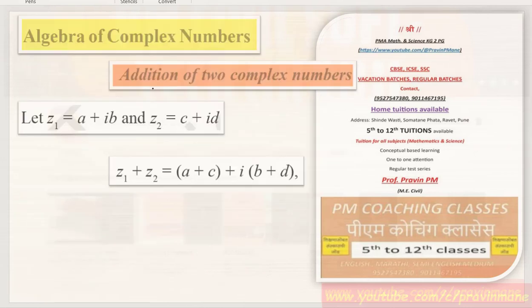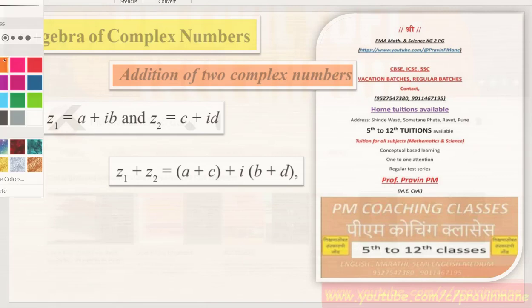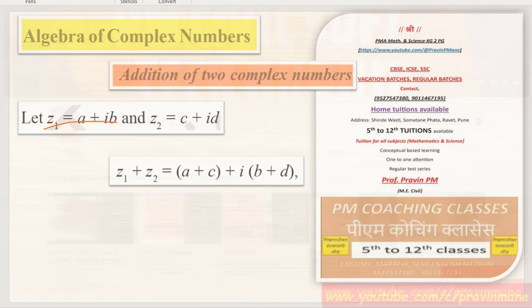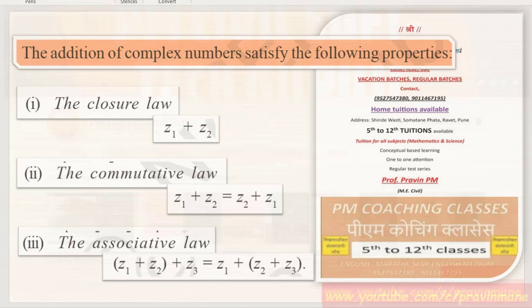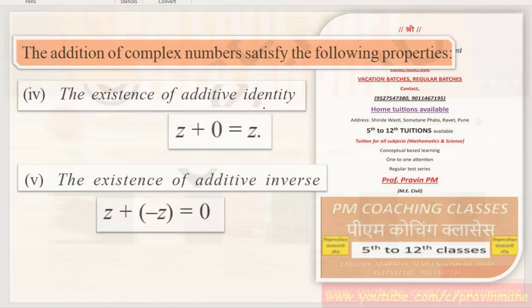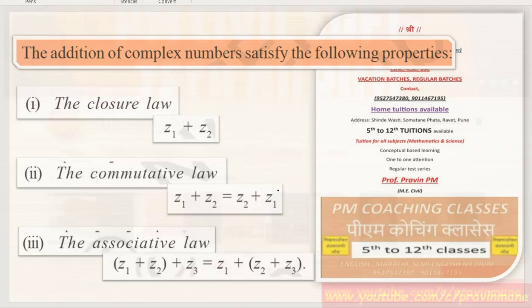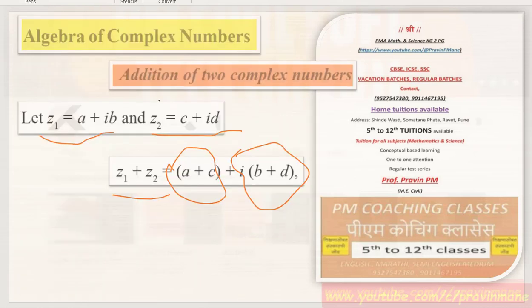Algebra of complex numbers — addition of two complex numbers. Let z1 be the first complex number and z2 be the second complex number, and we add z1 plus z2. There are different laws of mathematics: closure law, commutative law, associative law, existence of additive identity, and existence of additive inverse. For addition, we add the real parts together and the imaginary parts together.